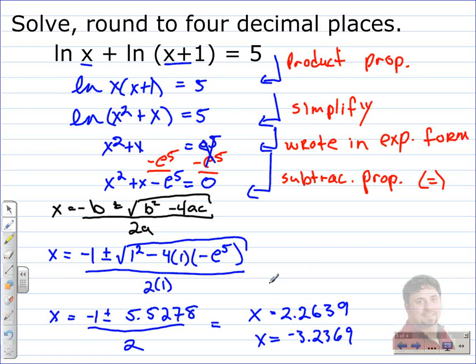What's wrong with this one is that we cannot be working with a negative log. So that's no good. We can scratch it out. So our solution here is x equals 2.2639.